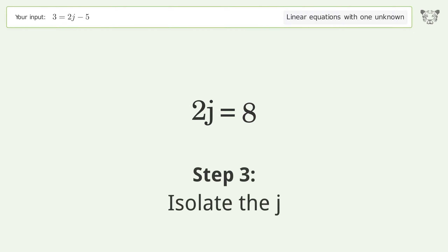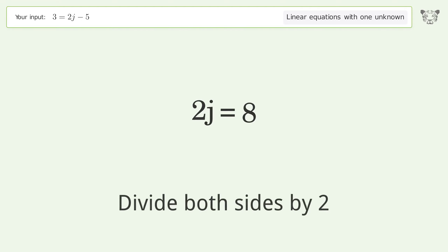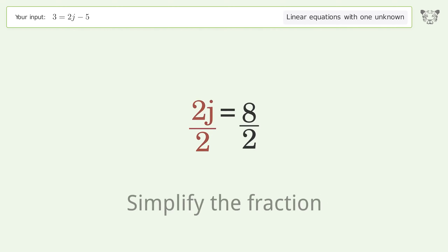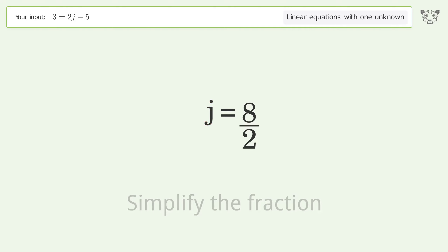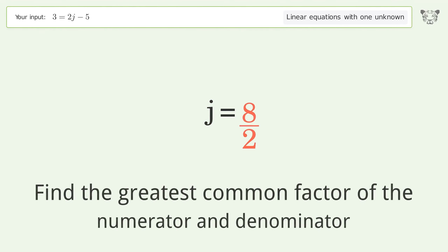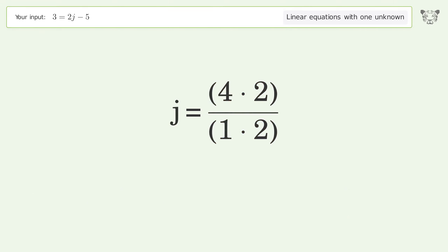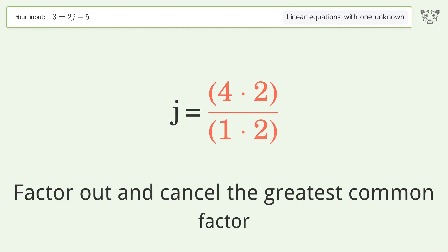Isolate j by dividing both sides by 2 and simplify the fraction. Find the greatest common factor of the numerator and denominator, then factor out and cancel the greatest common factor.